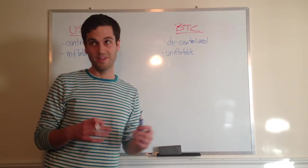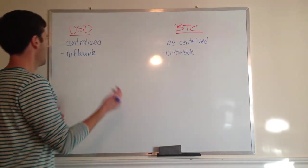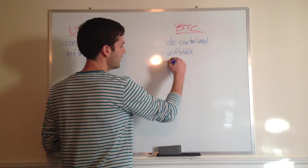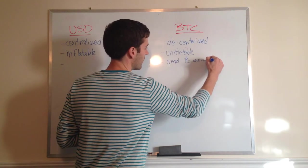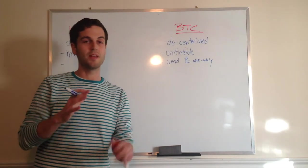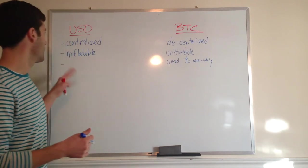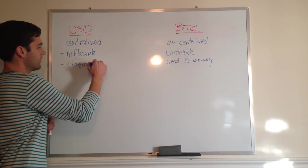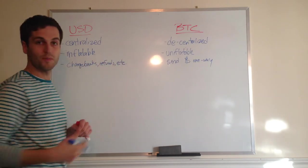With Bitcoin, you can only send it one way. So I send money to you—you can't send me a refund or send it back. If you send it back to me, it's a separate transaction. Whereas in the US dollar, we have things like chargebacks, refunds, etc.